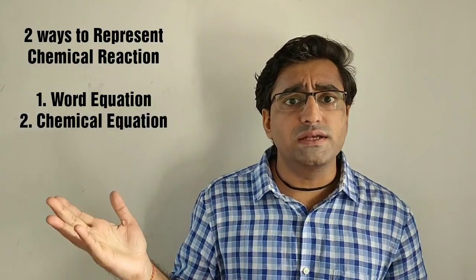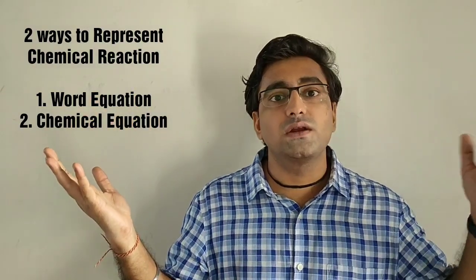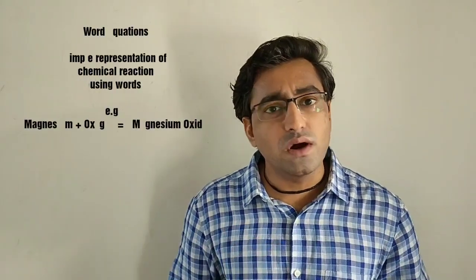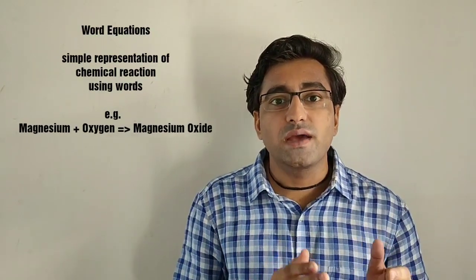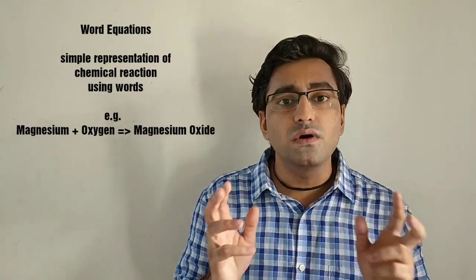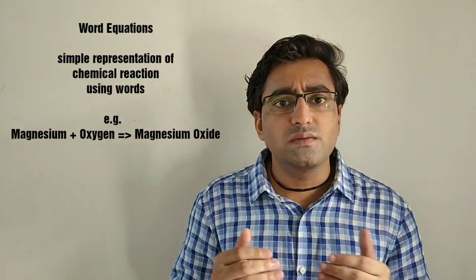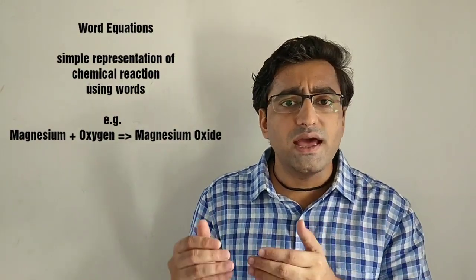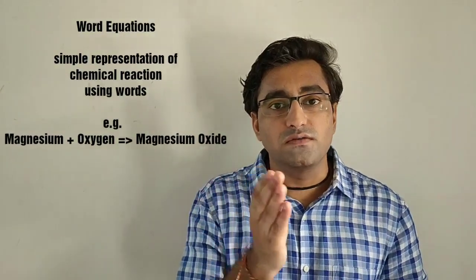These chemical reactions can be represented in two ways: one is a word equation and the second is a chemical equation. A word equation is the simple representation of a chemical reaction using words. For example, this reaction can be written as: magnesium plus oxygen gives magnesium oxide.